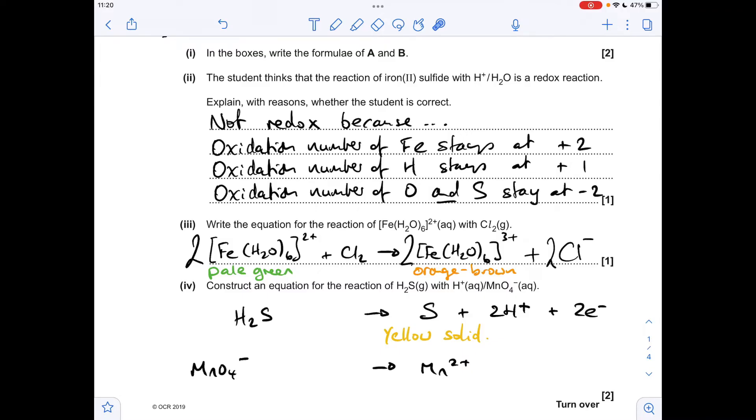Moving on to the MnO4- half equation. We're told that it goes to this colorless solution containing Mn2+ ions. Sort the oxygens out, so we'll put four H2Os on the right. Obviously, that's introduced hydrogen, so we'll bring the H+ in now. We need eight H+ on the left. So that's all the atoms sorted. We just need to sort out the charge. Overall on the left, we've got 7+, 1- and 8+. On the right, we've got 2+. So we need to bring that 7+ on the left down to 2+, and we do that by adding five electrons.